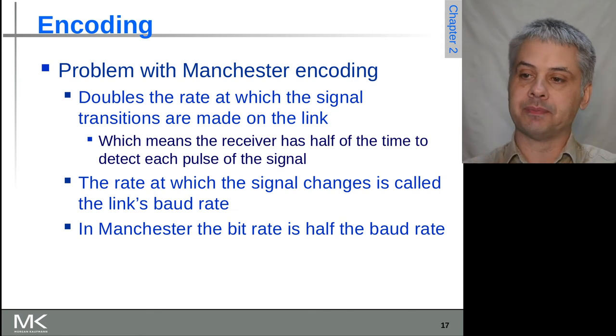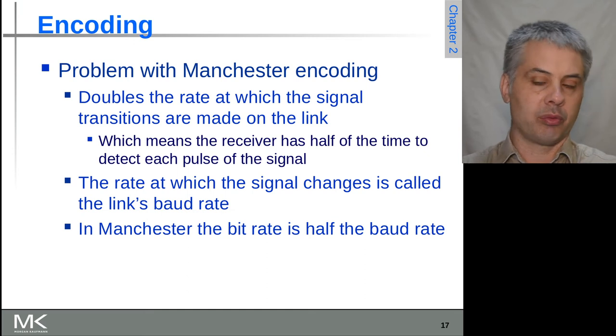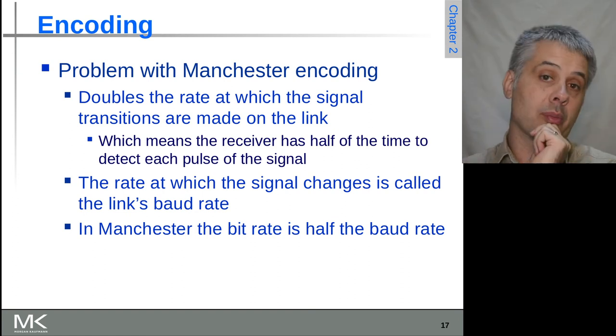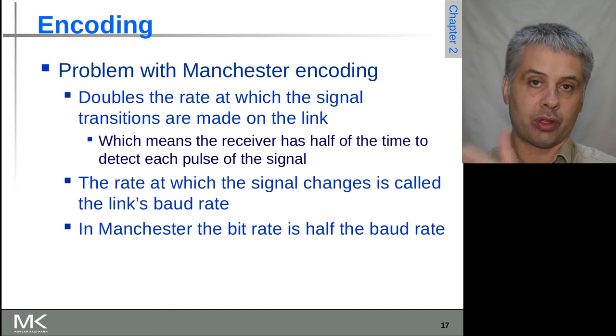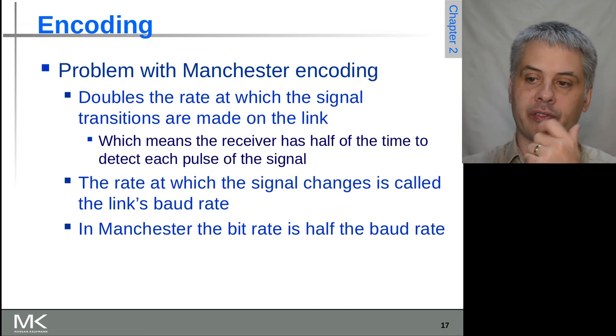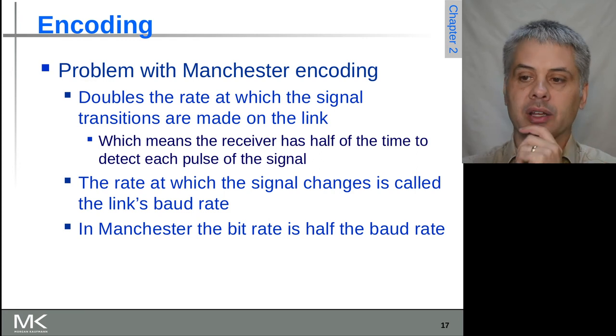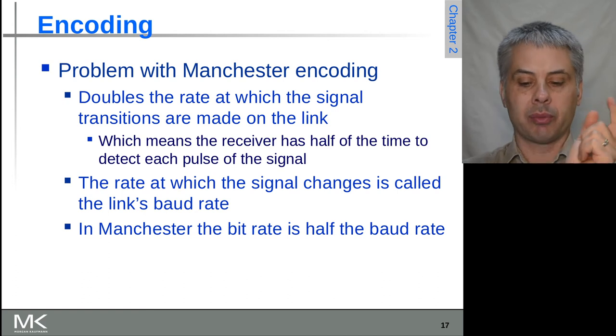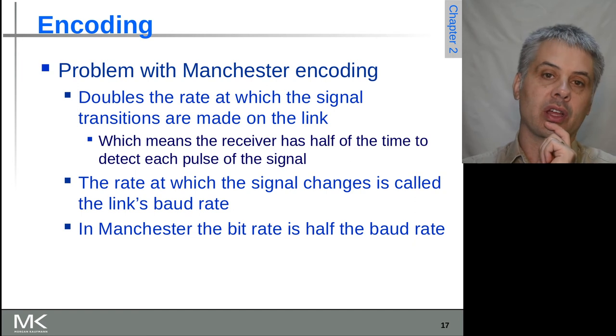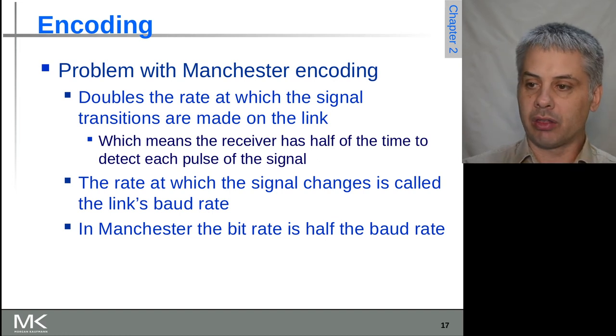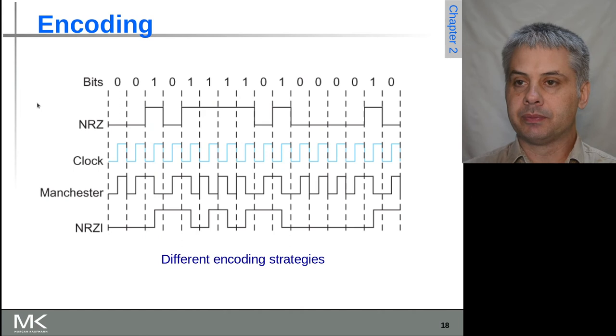In this case, the number of transitions that you might get on the line or on the storage media is actually twice the number of bits of data that you can get. So effectively, you need two transitions to encode some data. The rate at which the signal changes is called the baud rate. That can be more or less than the bit rate depending on the encoding. In the case of Manchester coding, the bit rate is only half of what the baud rate is because the signal is changing twice as frequently as you're actually transferring bits. This is not ideal.